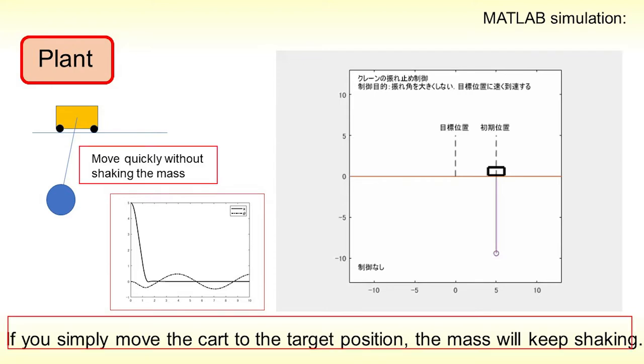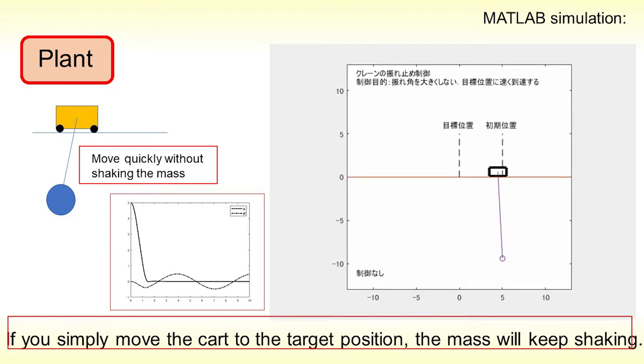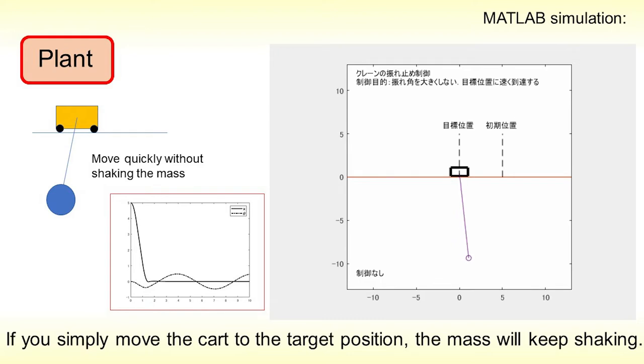The objective of positioning control is to move quickly without shaking the mass. If you simply move the cart to the target position, the mass will keep shaking. So it is required to control the plant appropriately.